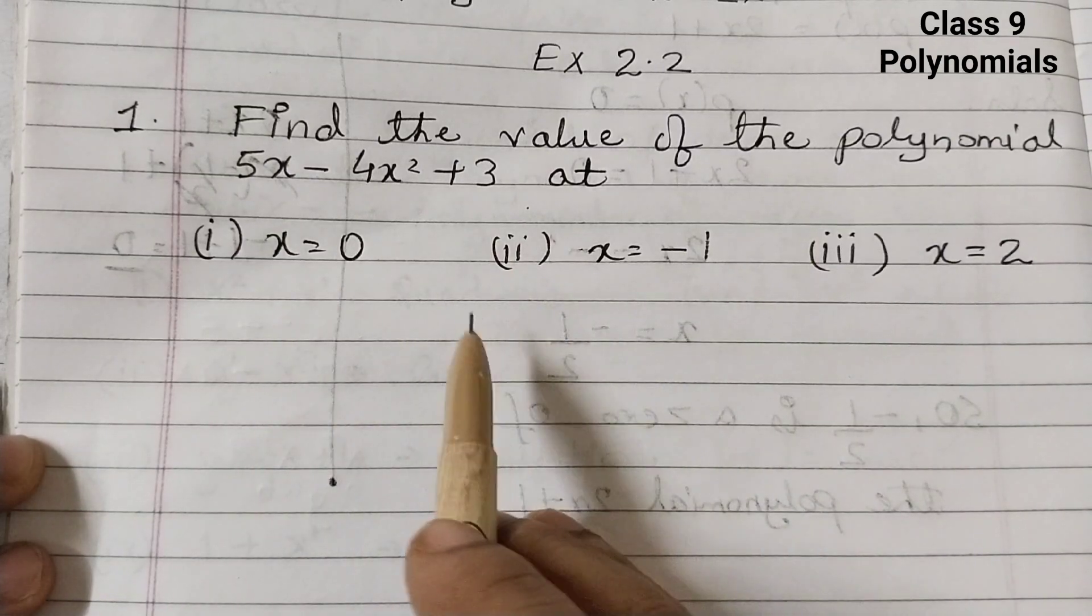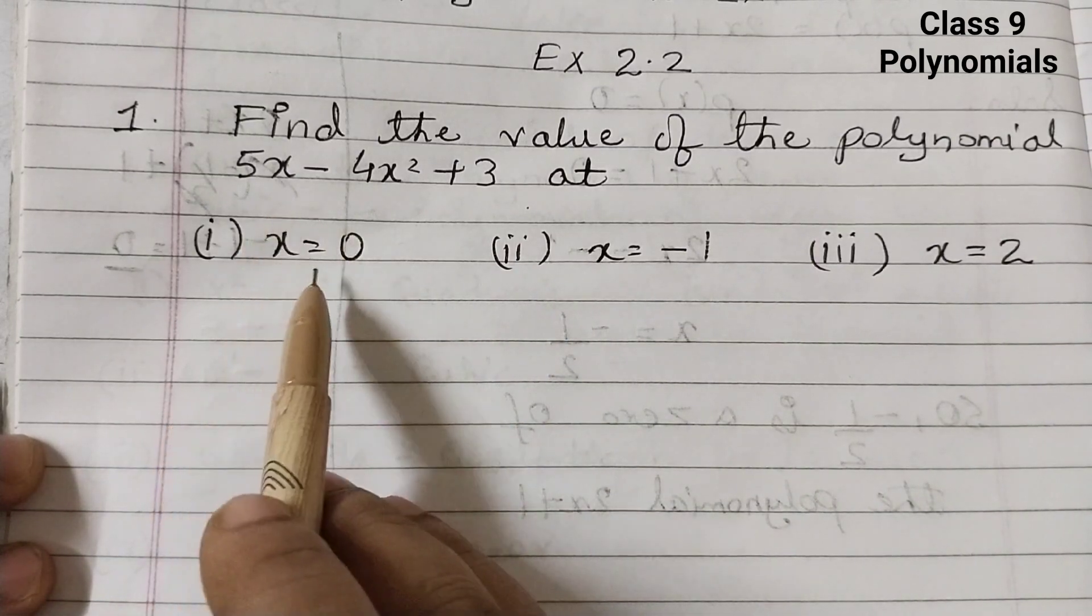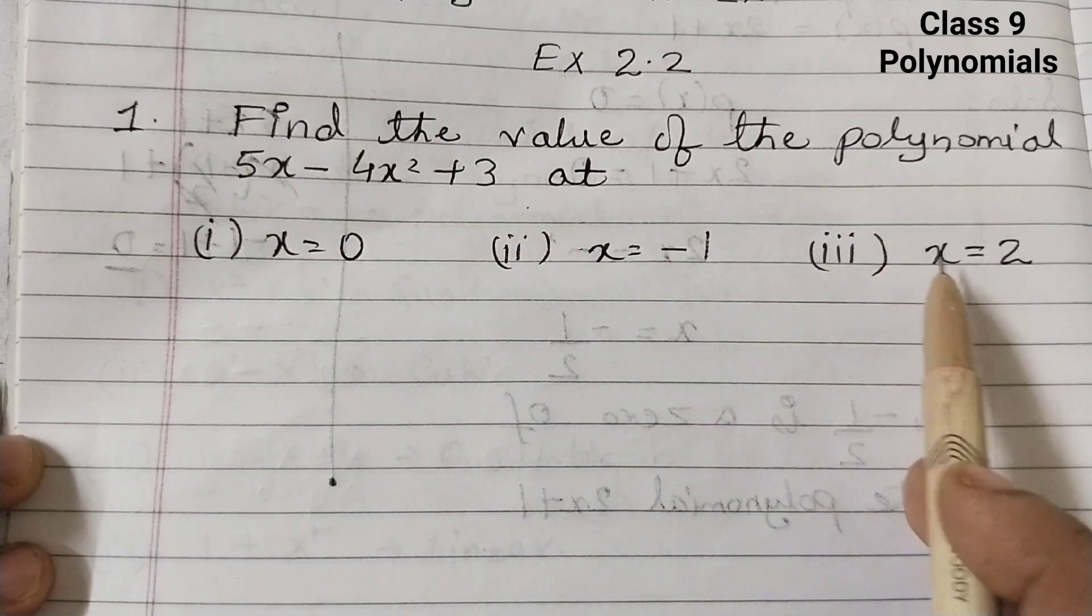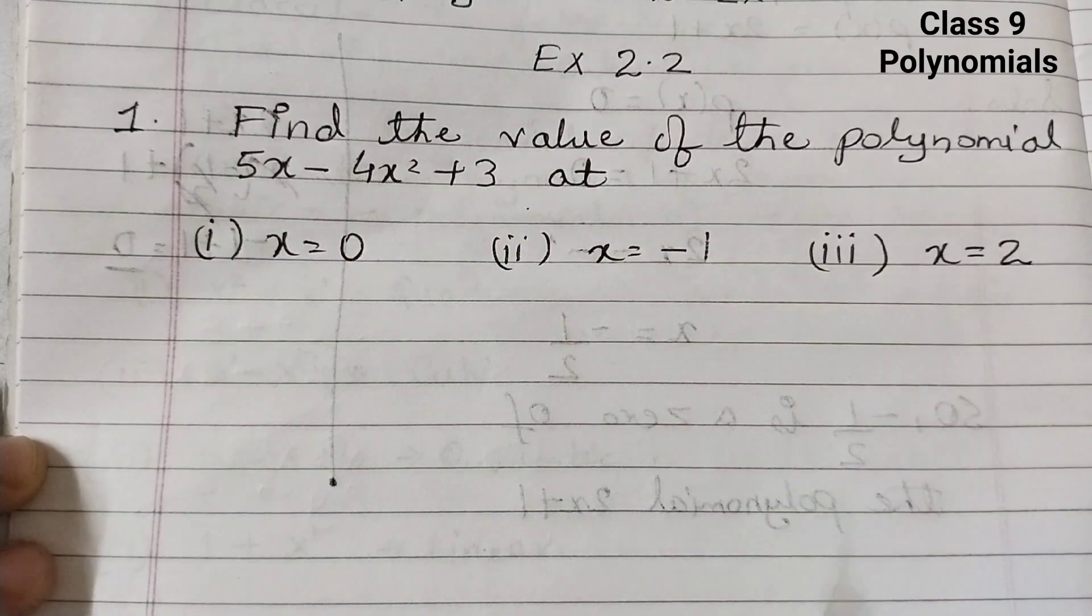So in this question all you need to do is replace x by 0, x by minus 1, and x by 2, and then find the values for that.